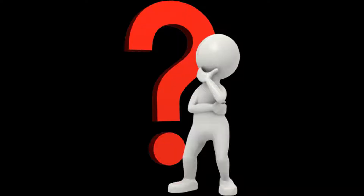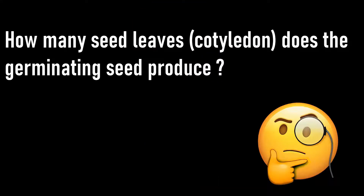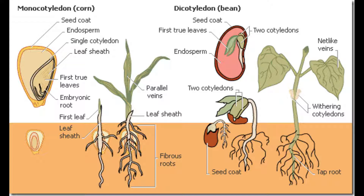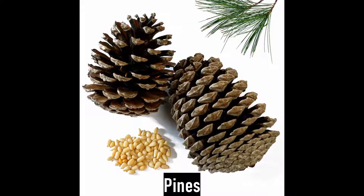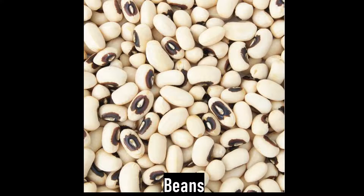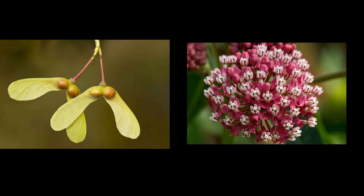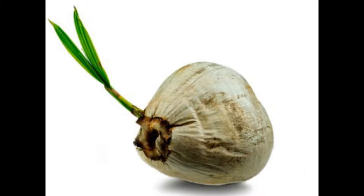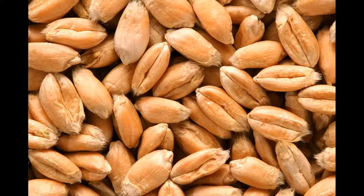Number four: with angiosperms, you ask yet another question — how many seed leaves, or cotyledons, does the germinating seed produce? Plants with one cotyledon are called monocotyledons, and those with two cotyledons are called dicotyledons. Examples of dicots include beans, maple, and milkweed. Examples of monocots include coconuts, corn, and wheat.